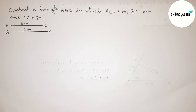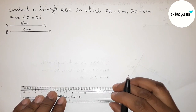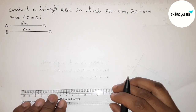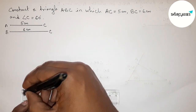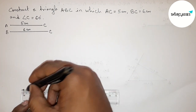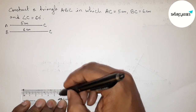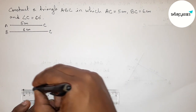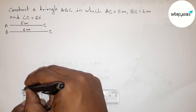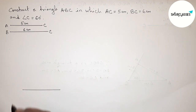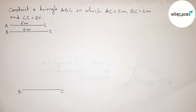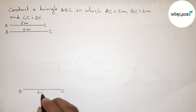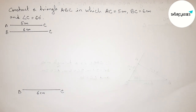Now we have to draw the line BC equals 6 centimeter. Starting from 0, this is 6 centimeter. Taking point B here and point C here, so BC is 6 centimeter. Now drawing a 60 degree angle on the point C.